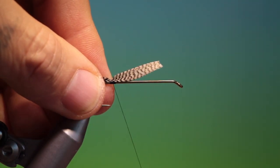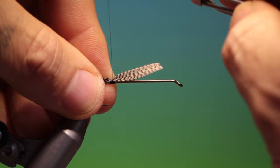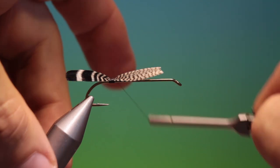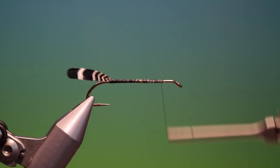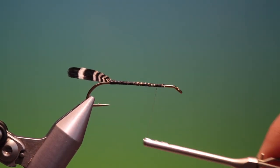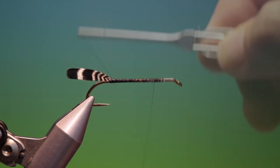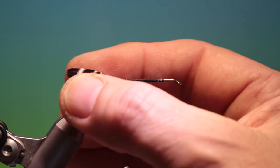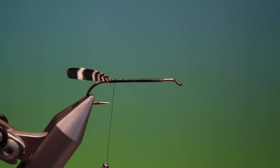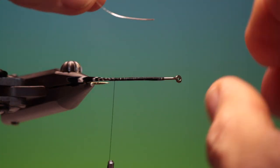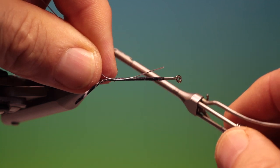That's looking good and then we'll go forward over the whole hook shank and then we can go back. Remember to flatten your thread. Good. Then we have a piece of medium oval tinsel.